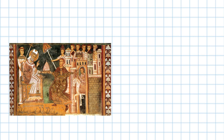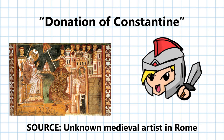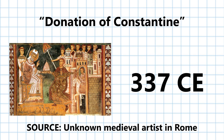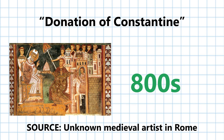One famous case was the Donation of Constantine, which was believed to be written by the Roman Emperor in 337 CE, giving the Pope complete authority over the Western part of Christendom. However, after studying the language used in the document, it is thought to have been made in the 800s. Well, that's bad. With more advances in other disciplines such as science, linguistics, or archaeology, more evidence has been tested and our story has become more reliable.